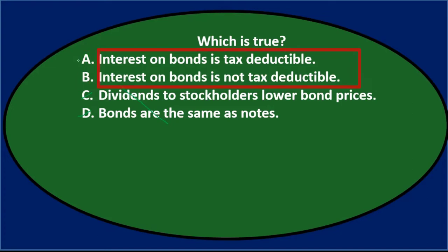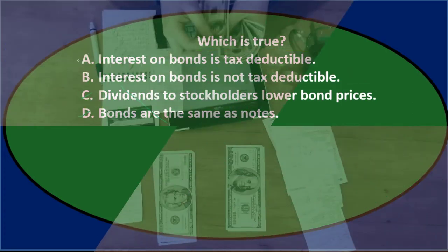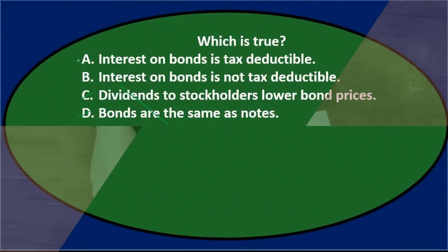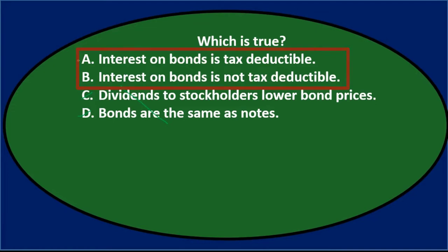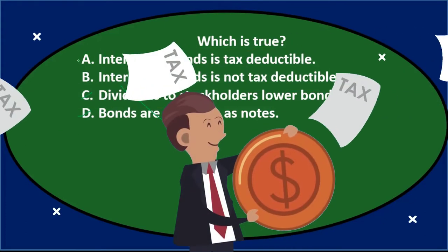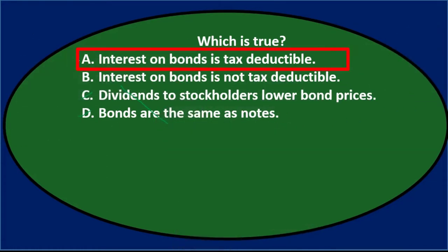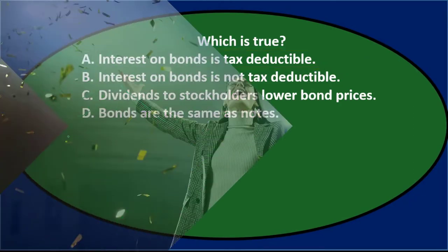The correct answer is A — interest on bonds is tax deductible. Remember, we're the issuer of the bond, so we have to pay interest. That's not ideal, but at least we get to deduct it from taxable income, which lowers our taxes. Paying interest is not good, but it is typically tax deductible.